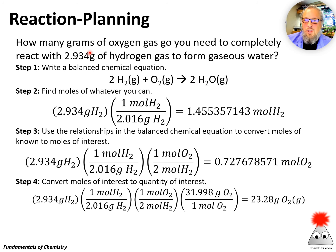Step two, find moles of whatever you can. The only thing we've got information about here is hydrogen gas. So find out moles of hydrogen gas. This should look familiar. The numbers are the same as they've been. Use the relationship in the balanced chemical equation to convert moles of known to moles of interest. Again, same two terms. And now I want to know moles of oxygen compared to moles of hydrogen. So that's a one to two ratio. I can make that many moles of hydrogen and convert moles of interest to quantity of interest. We'll get 23.28 grams of oxygen. So that's a reaction planning type of stoichiometry problem.